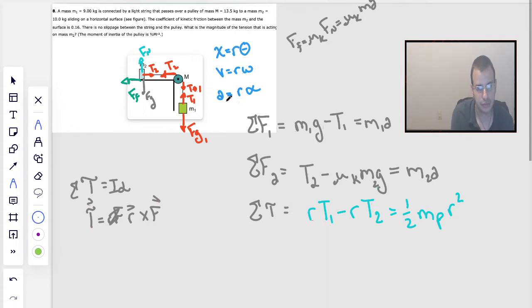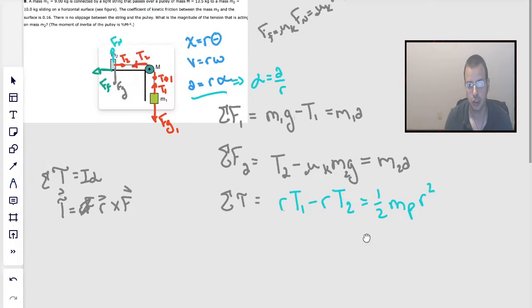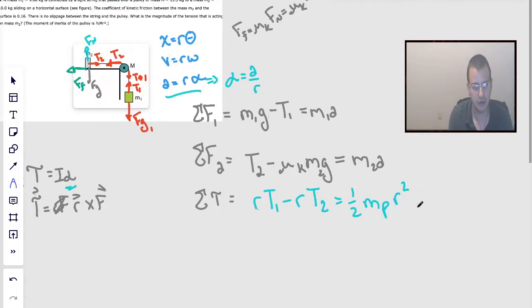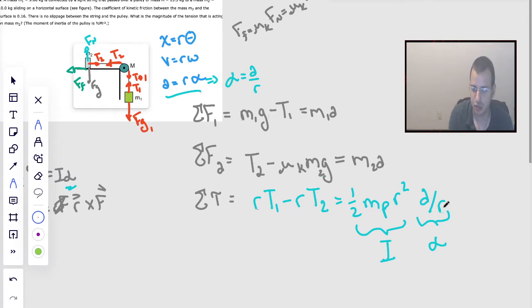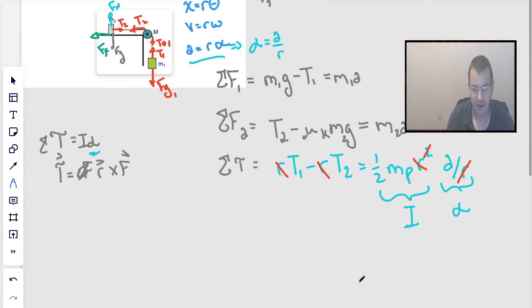Now we need alpha. Rearranging our relationship between linear and angular, we get alpha equals A over R. So we can rewrite alpha, plugging it in—this is I moment of inertia, this is alpha—A divided by R. One of those R's cancels, the other R cancels. We are left with tension 1 minus tension 2 equals one half times the mass of the pulley times the acceleration of the system. This is the same A for all of them.